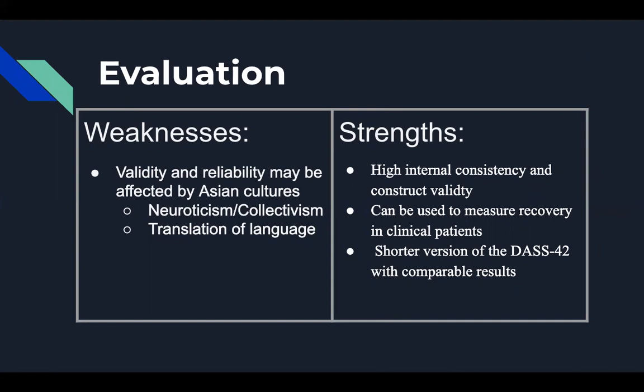So now for the strengths and weaknesses. The biggest weakness that we found was that cross-cultural research shows that Asians have higher levels of collectivism, which is believed to impact how individuals express emotion. When individuals care for their community more than themselves, they are more likely to have high levels of neuroticism. Those with high neuroticism would naturally score higher on an assessment testing depression. Therefore, the results on the DASS test would have less to do with the individual's level of depression and more to do with their culture. Also, the translation of words in Asian languages have multiple meanings, which could lead to test takers making inaccurate interpretations of the questions and therefore corrupting the results.